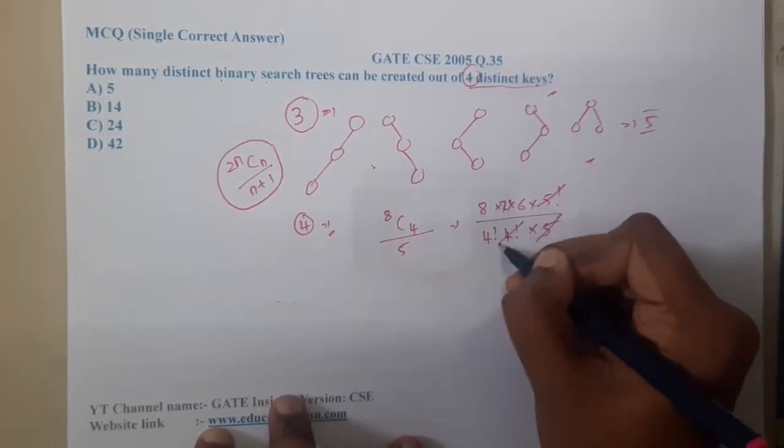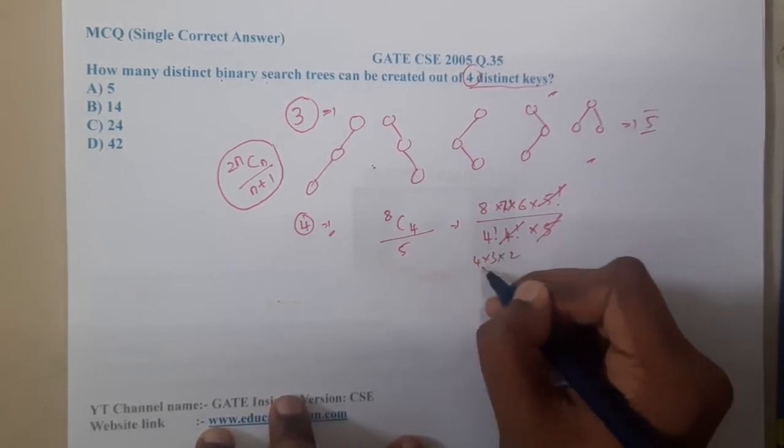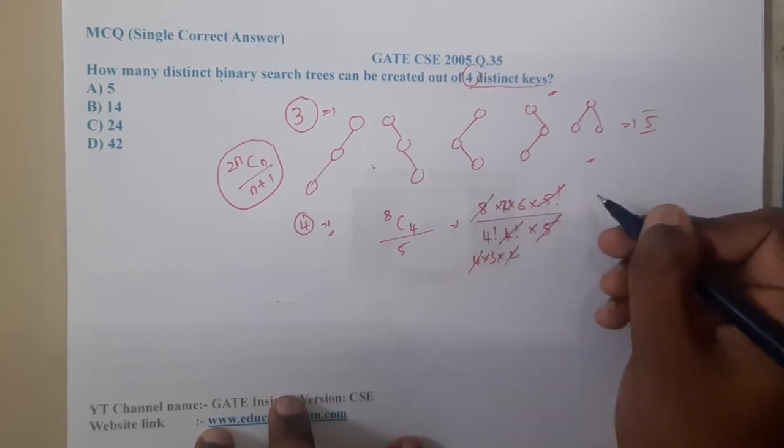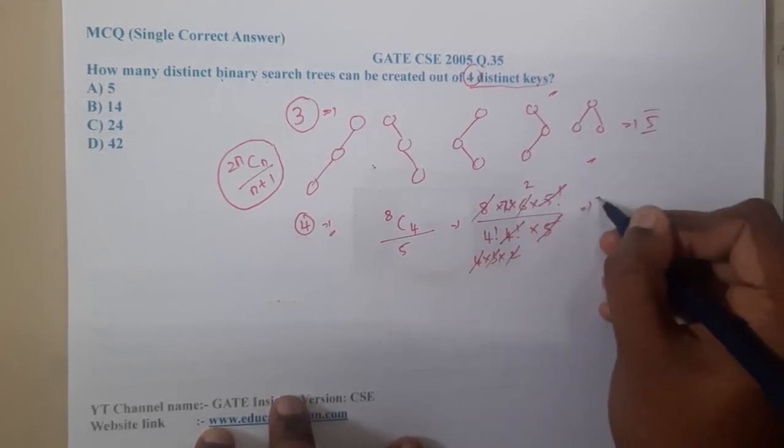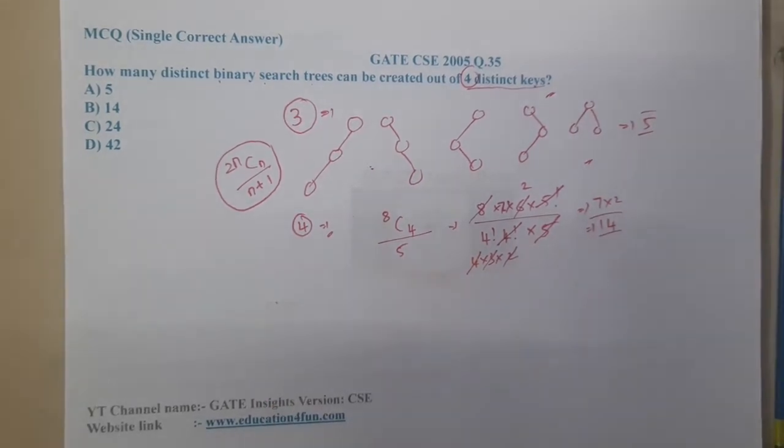You can cancel this 5 factorial and these two. And 4 factorial is nothing but 4 into 3 into 2. So this 4, this 2 you can cancel with this, this 3 you can cancel with this. So at the end you got 7 into 2, that is nothing but 14.